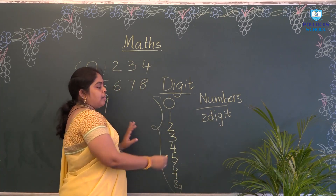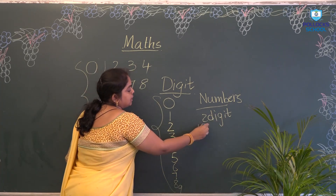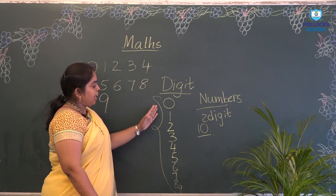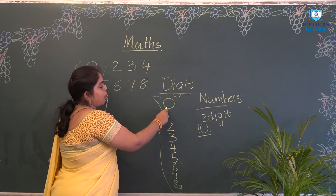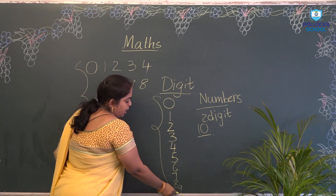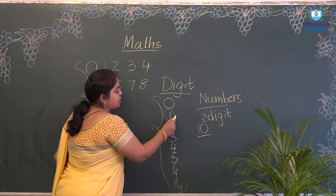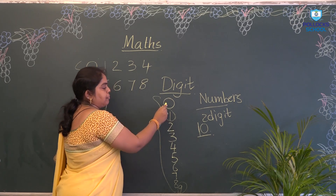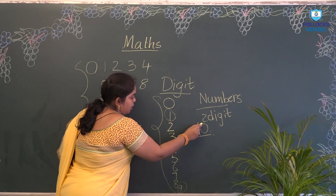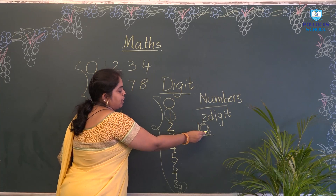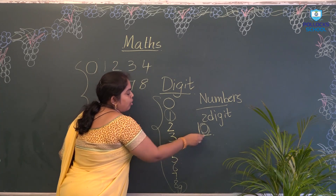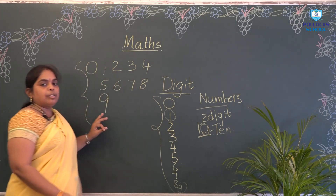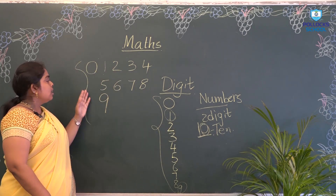After 9, you are all aware — what is that number? 10. How is 10 formed? If you come again from 0 — after 9 we write 1 again, and before the 1, what is the number? 0. So we write 10.